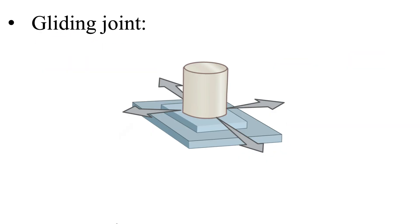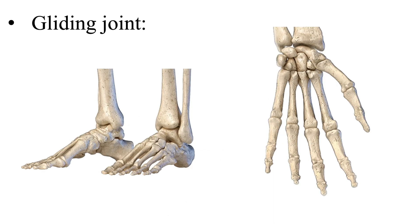Next we have gliding joints. This joint is formed when two flat surfaces of bones articulate, allowing for small shifting movements. For example, we have the intertarsal and intercarpal joints — small bones that are only able to slightly glide past one another. This synovial joint has the least movement of any synovial joint.